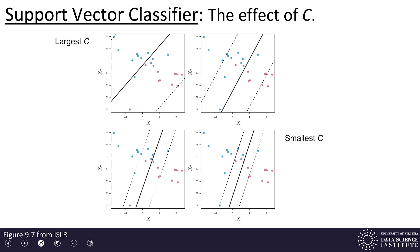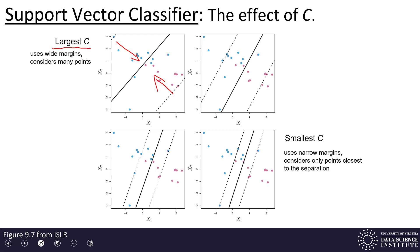Let's look at the effect of C. Here are four different plots with four different values of C. The top-left has the largest value for C and you'll notice it has the most data points inside those margins. Larger values for C wind up with wide margins and they consider many points in the estimation of that hyperplane. Over on the other side we have the smallest C, giving the smallest margins — the total amount to which points can lie within those margins is the least, resulting in the narrowest margins considering only points closest to the separation curve. You can also see the two intermediate values of C and their results. So as C gets bigger your margins get wider; as C gets smaller your margins get narrower.